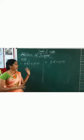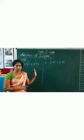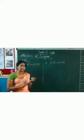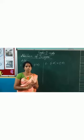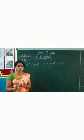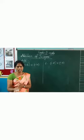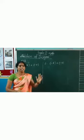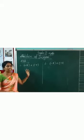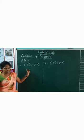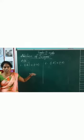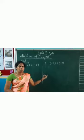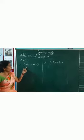Now we are going to see the addition of integers. See, so far you have learned only natural numbers and whole numbers. If I give natural numbers, you know to add directly. If I give whole numbers, you know to add directly. But now we are learning the new chapter, that is integers. Here positive numbers and negative numbers, all together they have given. Now let me go to the problem.